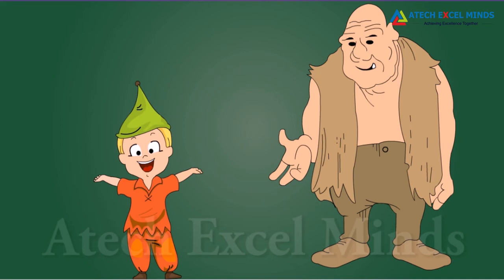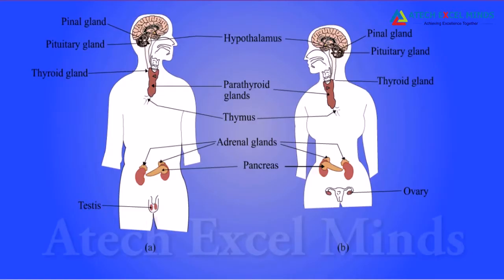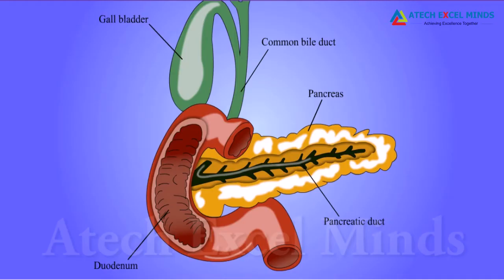Testosterone in males and estrogen in females are puberty hormones. Insulin is a hormone produced by the pancreas and helps in regulating blood sugar levels.